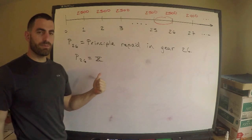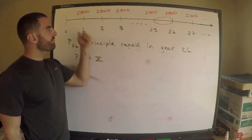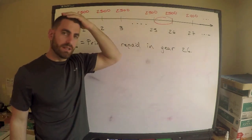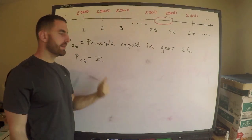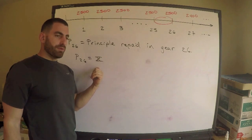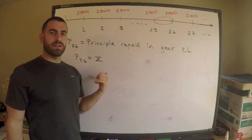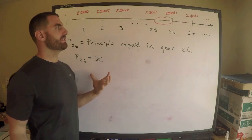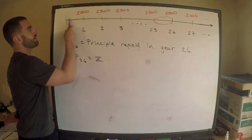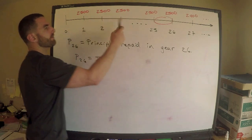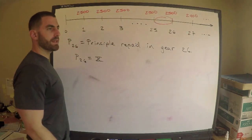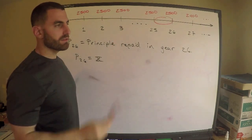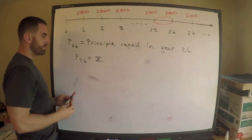If you have level payments, if you're paying off a loan with level payments, which we are in the first 26 years, then you can actually say that the principal that you're paying off in each year actually forms a geometric sequence. If I think of how much principal I paid off in year one, year two, year three, year four, up to 26, those change by a common ratio. So let me show you, let me be a little more clear about what I mean.